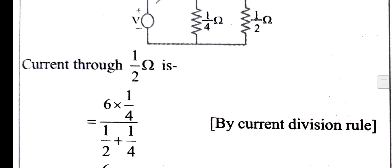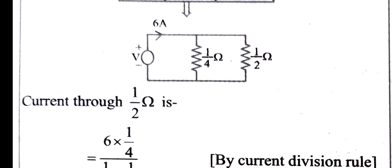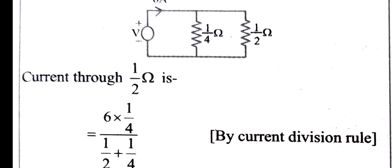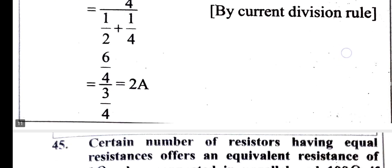Total current is 6. Using current division rule: current is 6 into (1 by 4) divided by total (1 by 4 plus 1 by 2). The answer is 2 ampere.